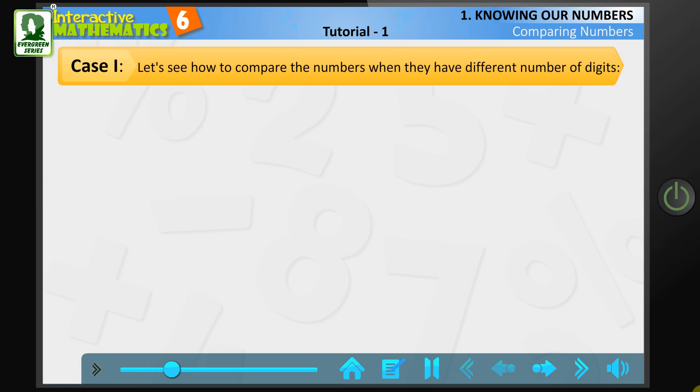First, let us see how to compare the numbers when they have different number of digits. Let's compare 6,754 and 51,287.